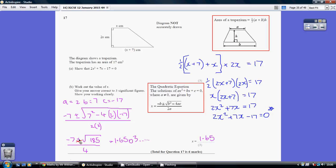It's minus 7 plus the square root of 185 over 4, which is 1.6503, rounding to 1.65 to 3 sig figs.